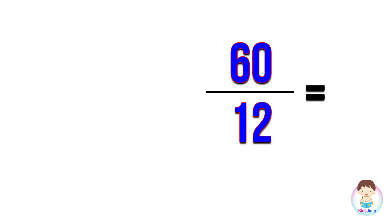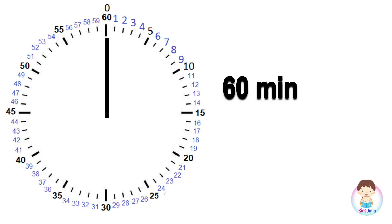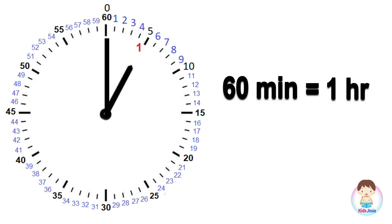If we divide 60 by 12, we get the whole number 5. So 60 divided by 12 is equal to 5. If the minute hand completes one full rotation — that is 60 minutes — we understand 1 hour is completed. At that time, the hour hand advances to the 5th mark. The number 1 is written at the 5th mark to read the hour.